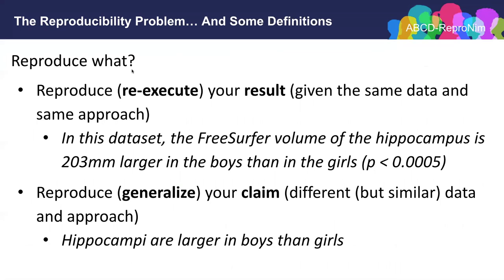The term reproducibility can be used in different contexts, so I want to take a minute to define what I'd like to use in the case of the ReproNim approach. The question of reproduce what? To some extent we have a publication itself and we may want to reproduce in the sense of re-executing a particular result. If a publication says in this dataset the FreeSurfer volume of the hippocampus is 203 millimeters larger in boys than in girls, we'd like to be able to re-execute and verify and reproduce that particular finding — that would be interesting, although not very biologically meaningful.